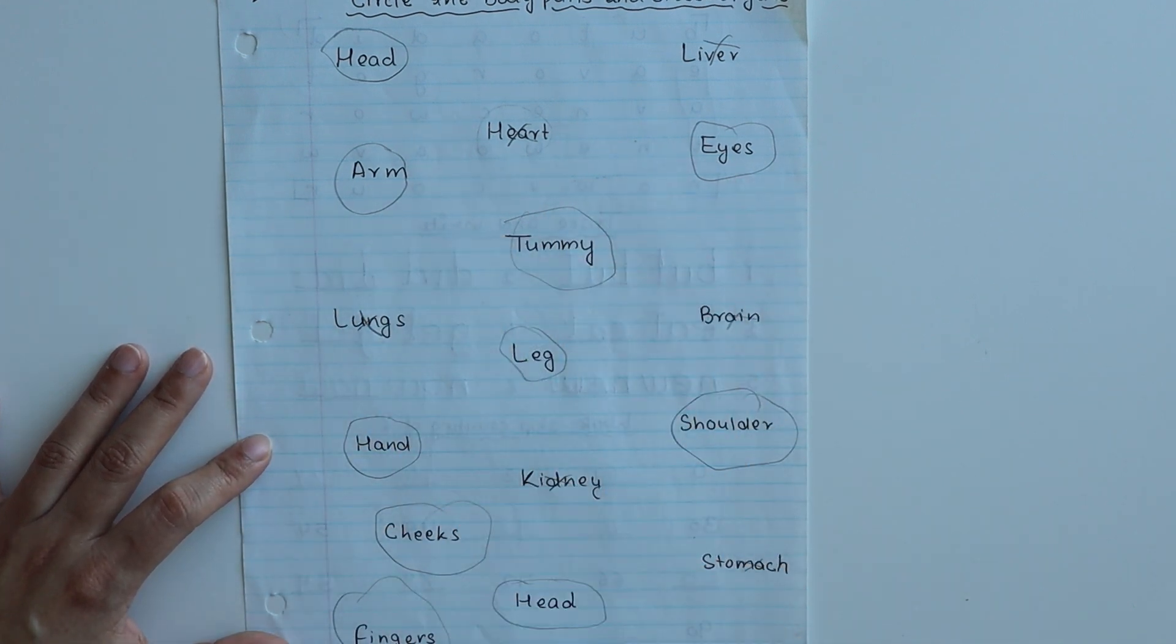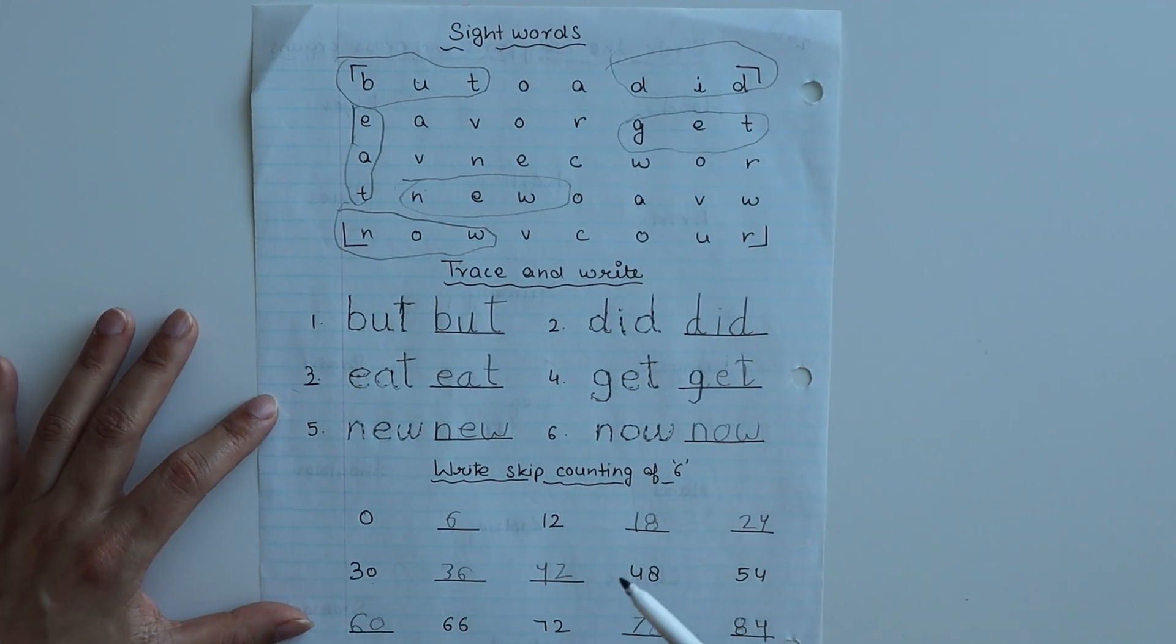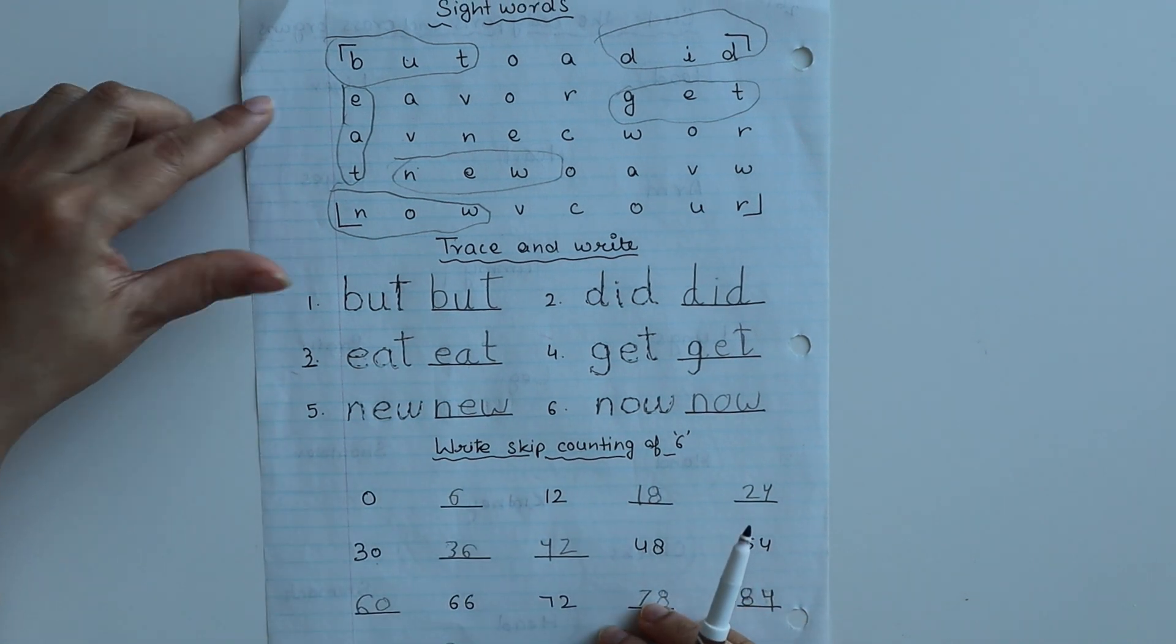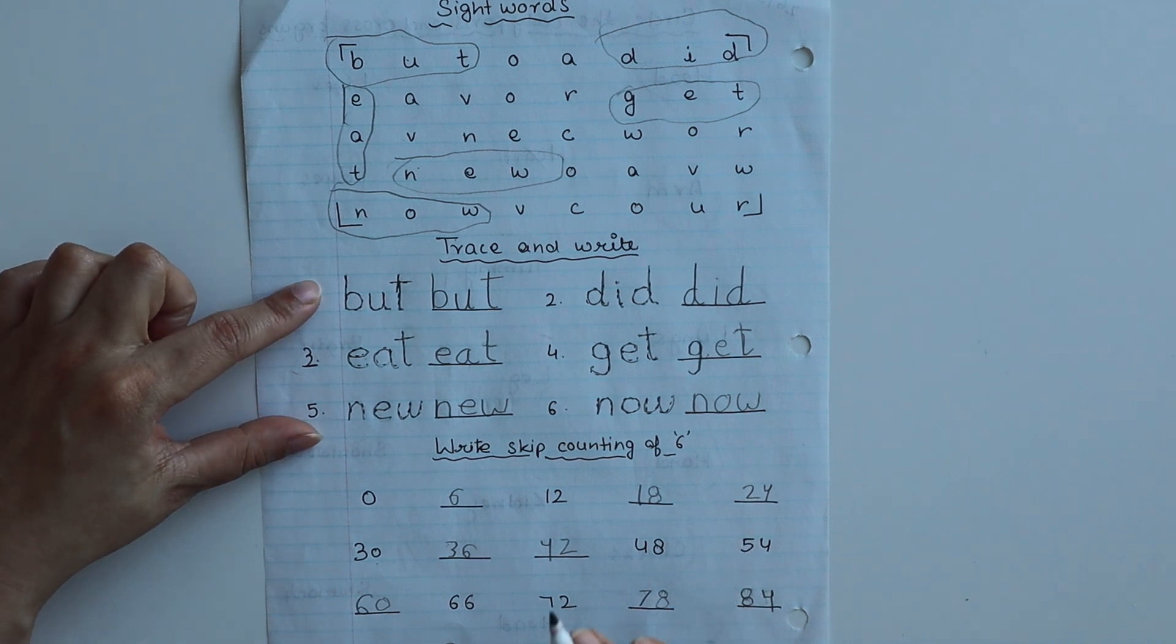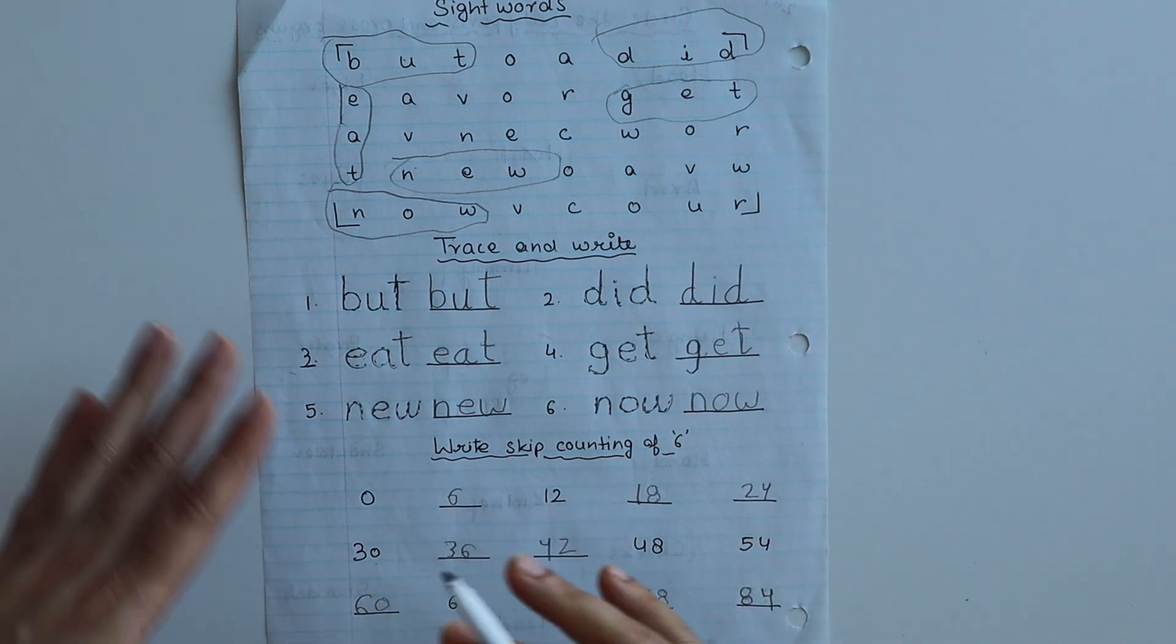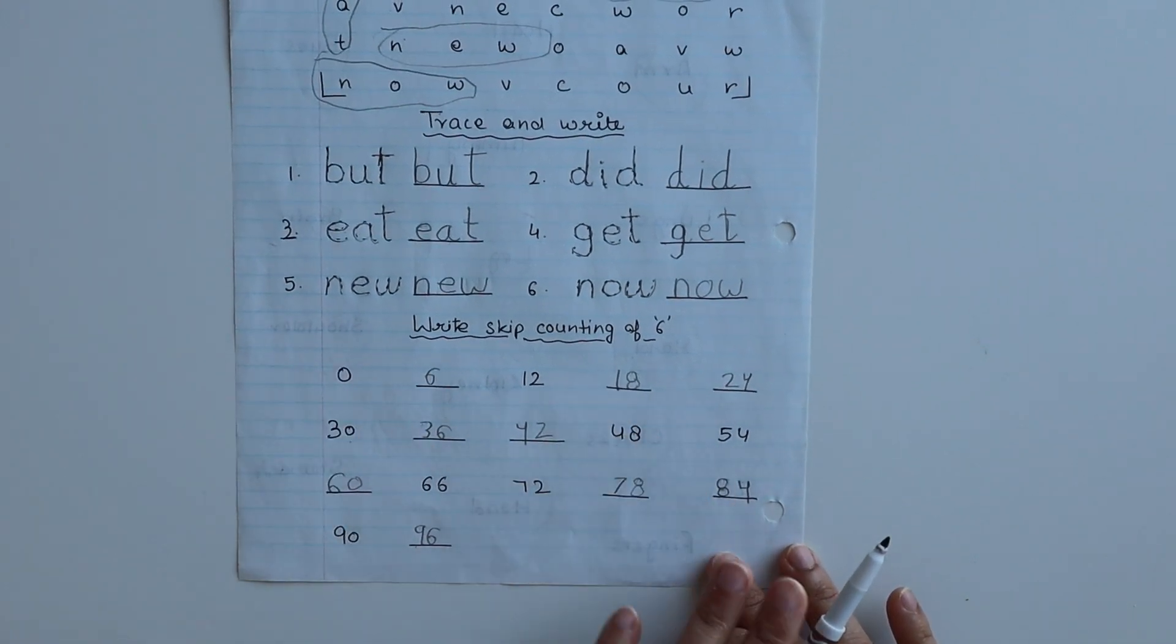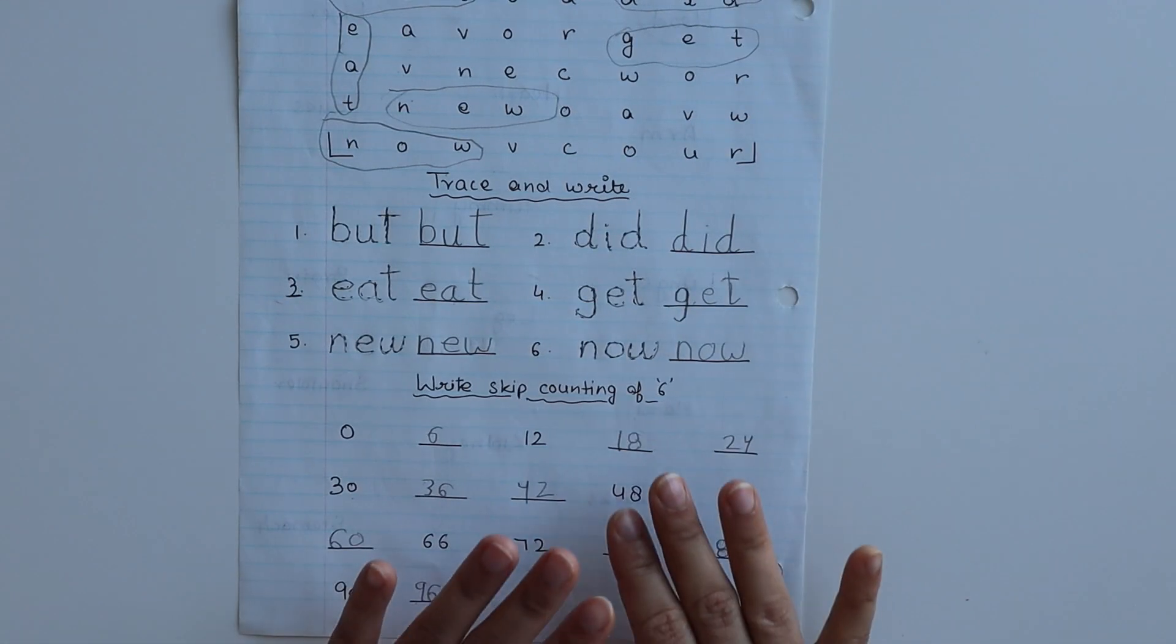The next worksheet is for sight words. I've given six sight words here and made a little word search activity. The sight words you trace and then write. Down here I have skip counting by six in the form of missing numbers.